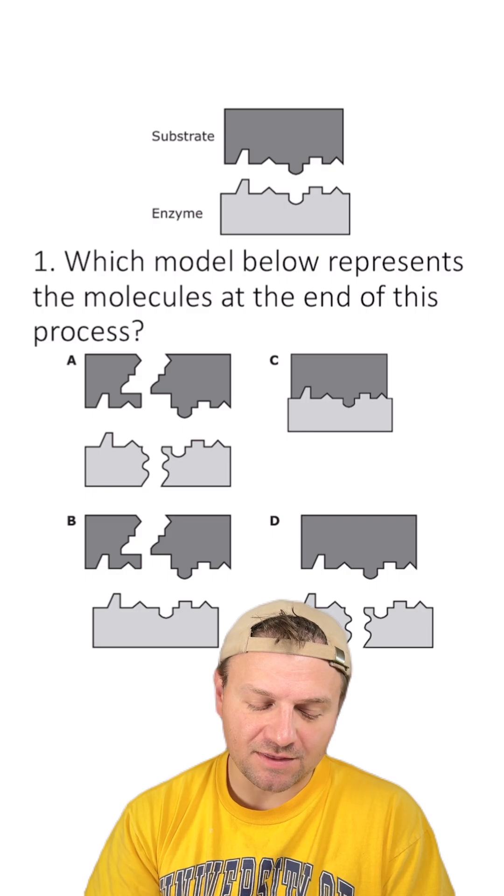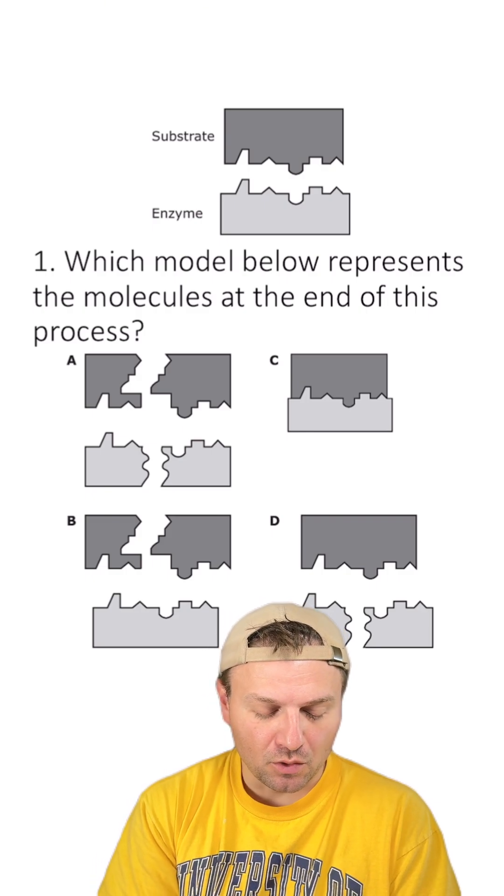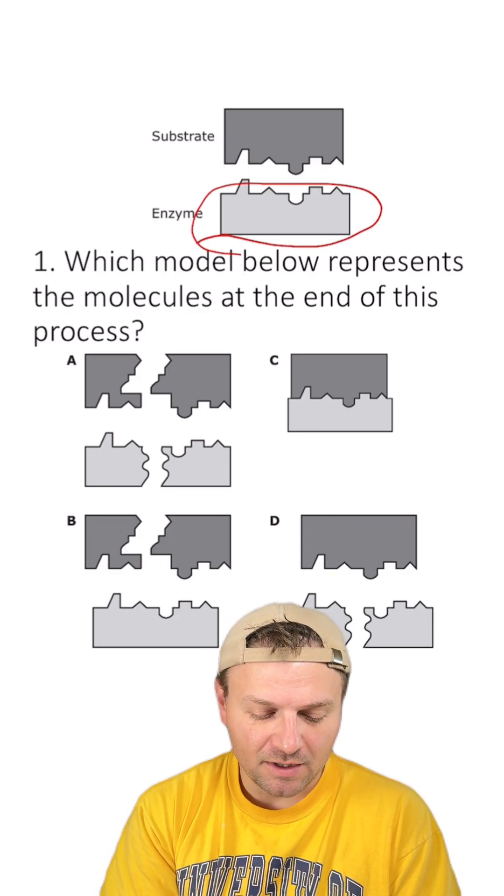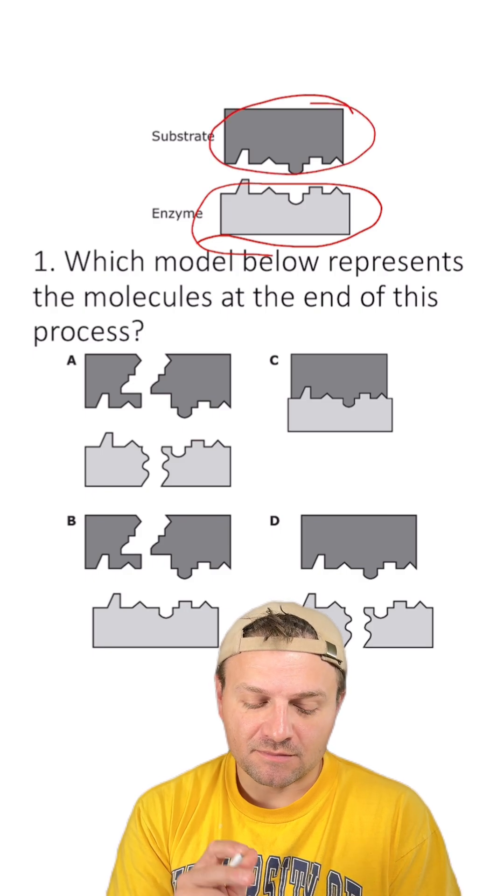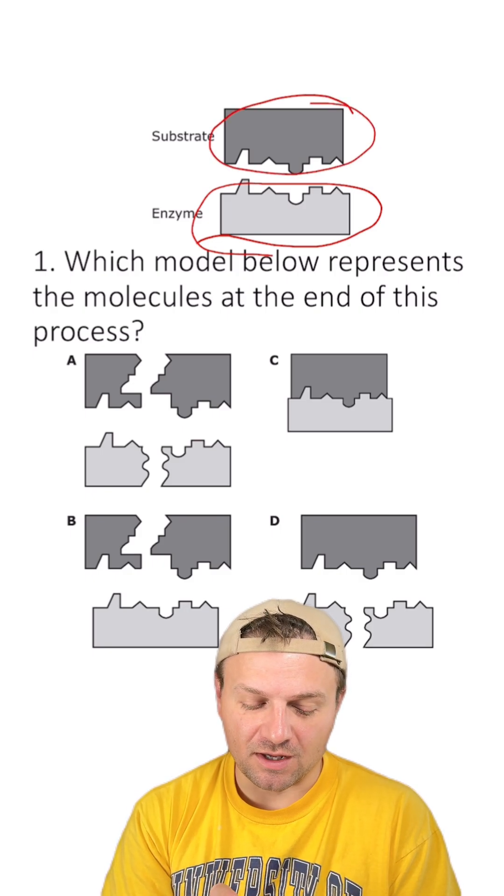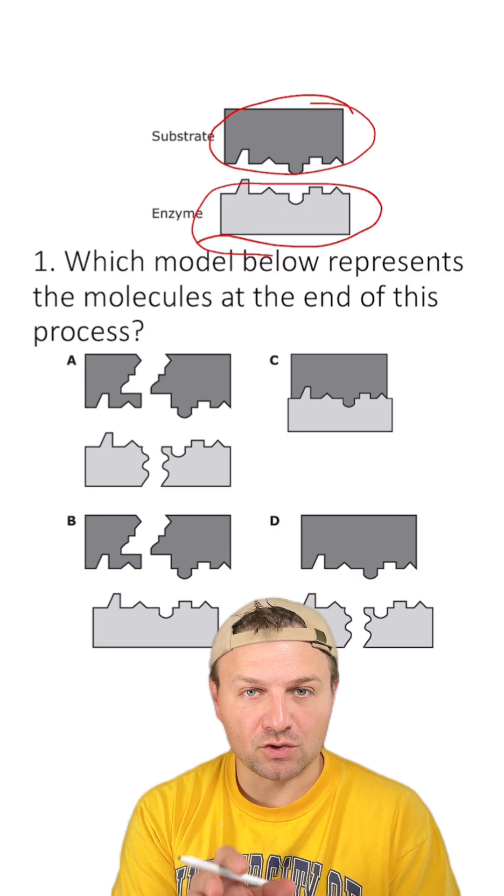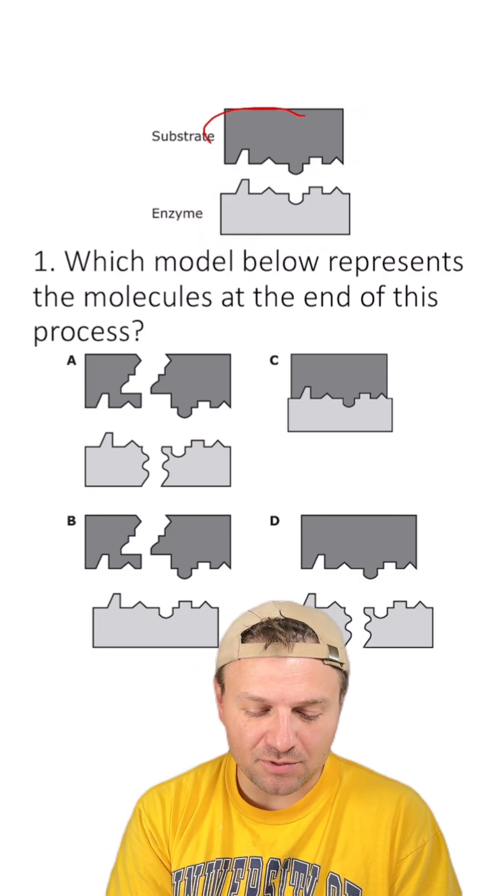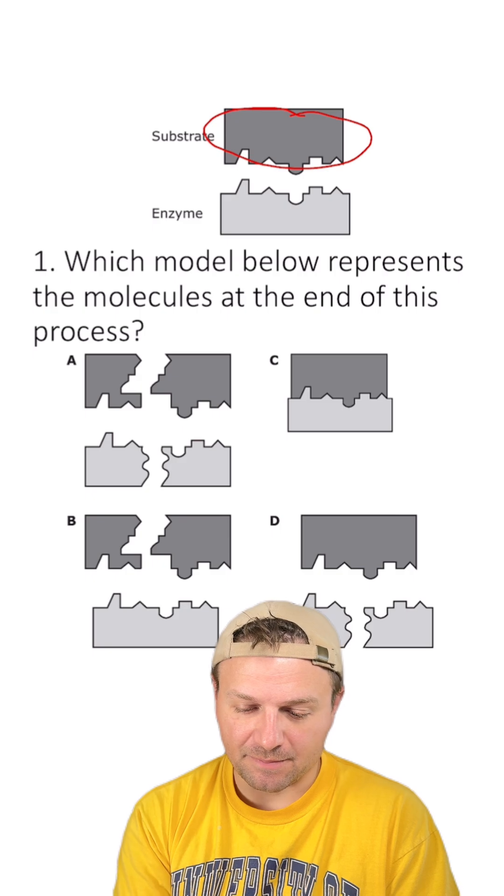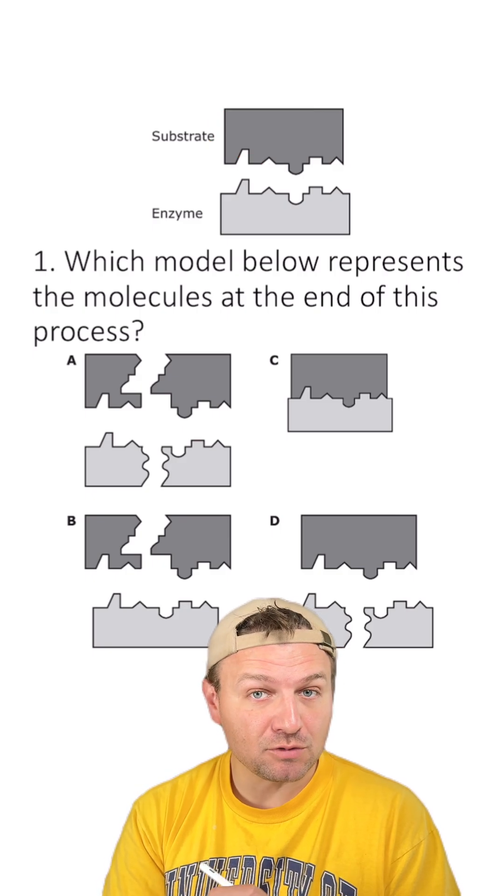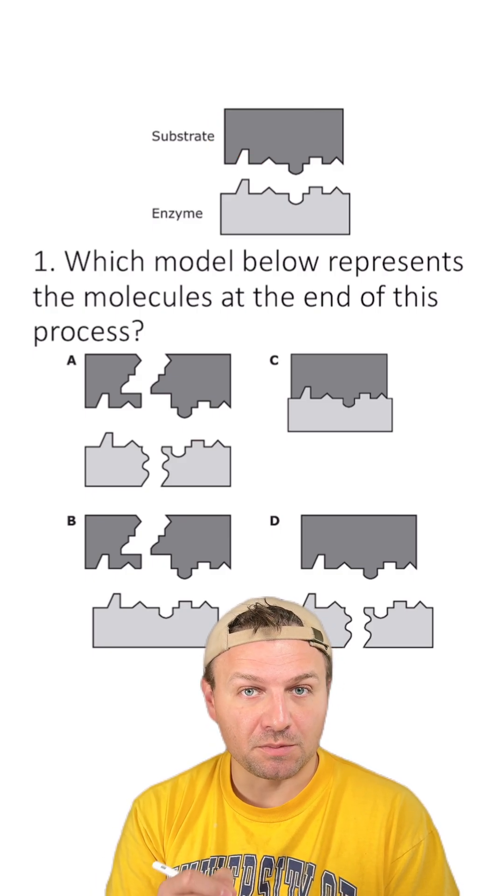Which model below represents the molecules at the end of this process? So what we're looking at here is an enzyme that's going to react with this substrate. Now, enzymes typically do one of two things. They either break things down or they join things together. And in this case, it looks like this substrate is going to be broken down by the enzyme. So in our answer, the enzyme shouldn't be changed and the substrate should be broken down.